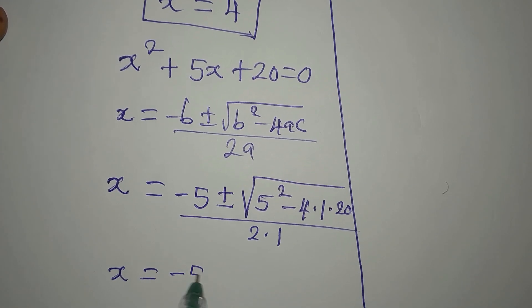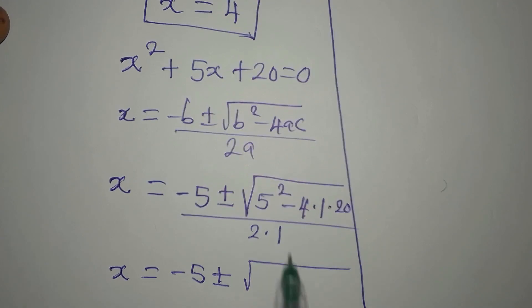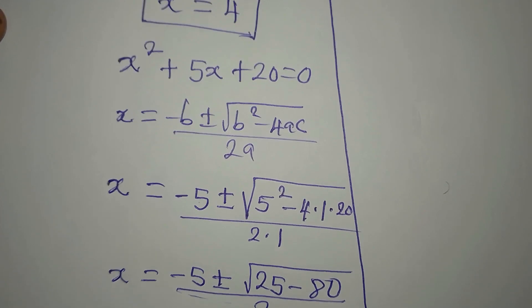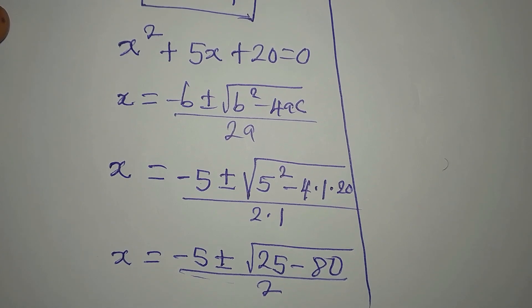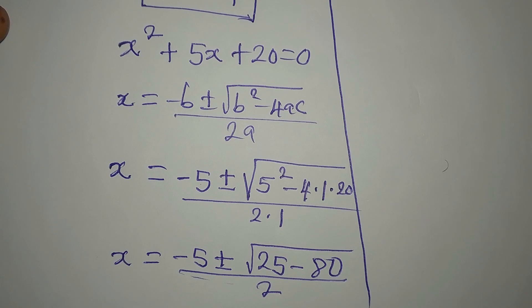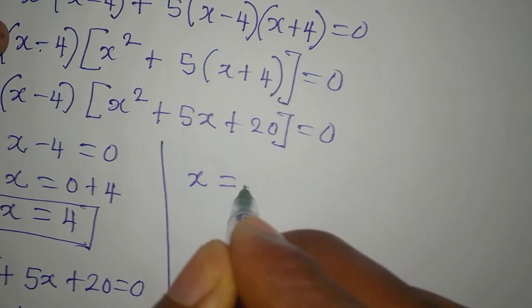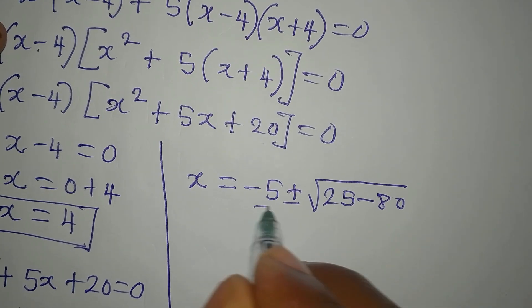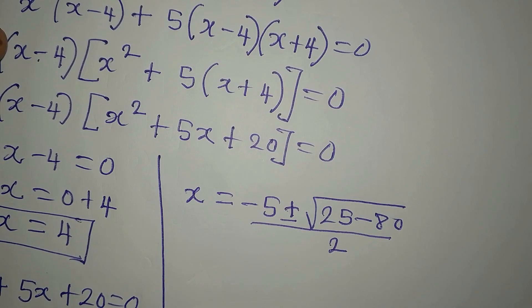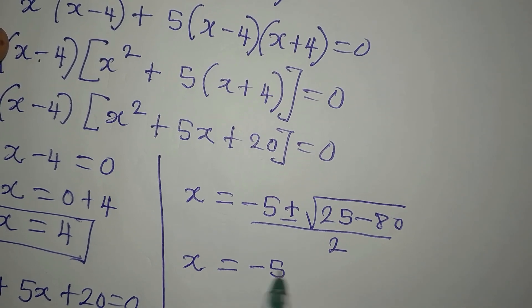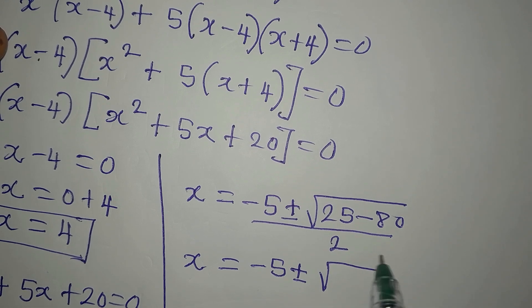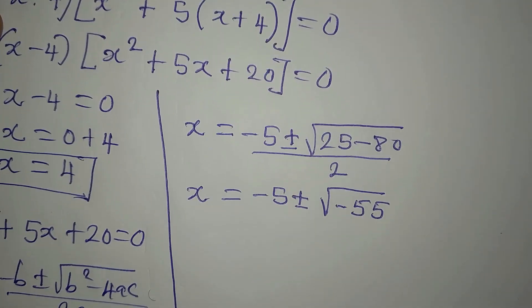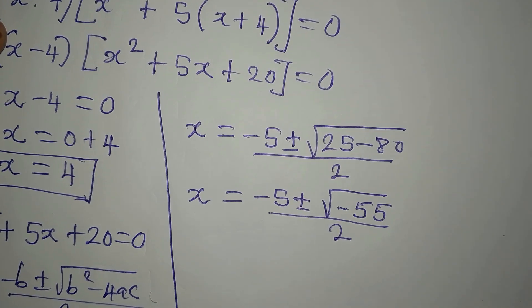Simplifying: x = (-5 ± √(25 - 80)) / 2. So x = (-5 ± √(25 - 80)) / 2. Now 25 - 80 gives us -55, so x = (-5 ± √(-55)) / 2.